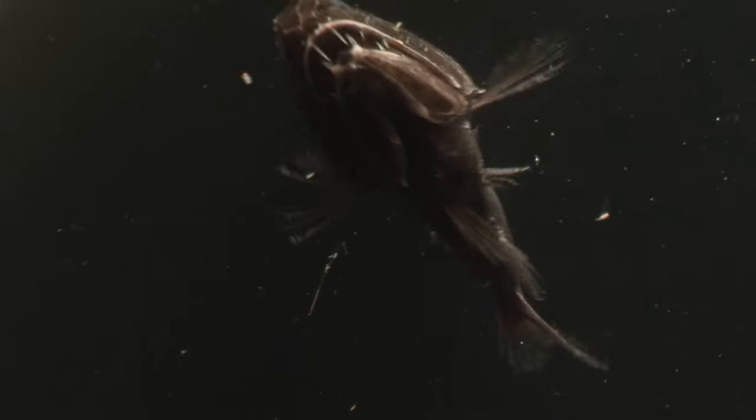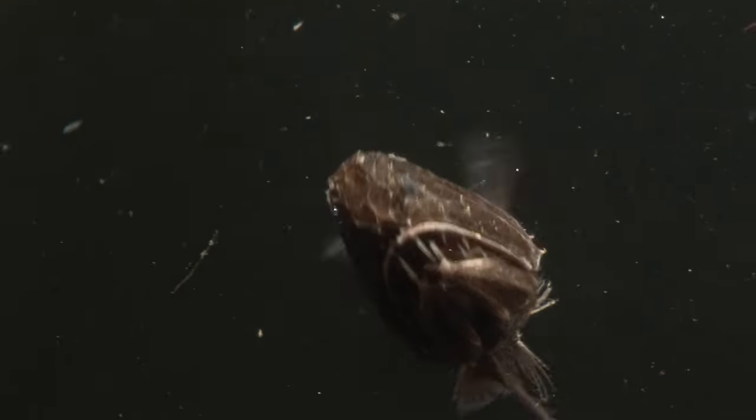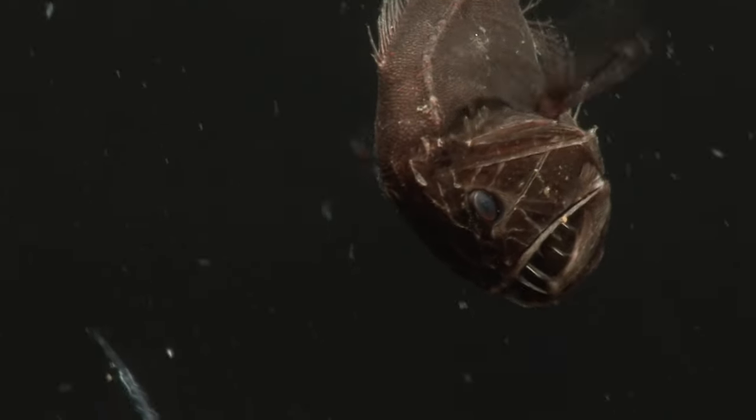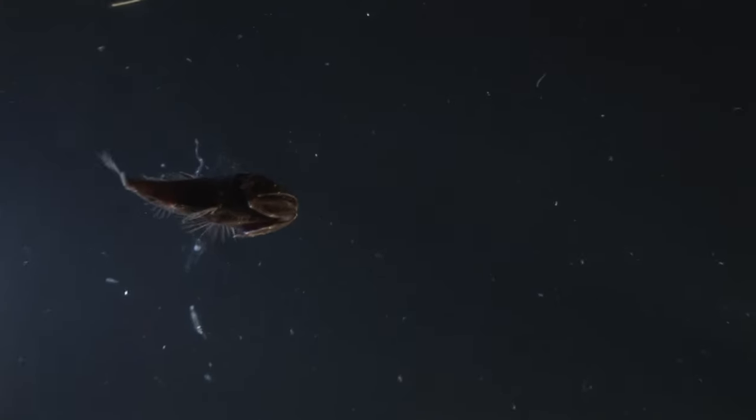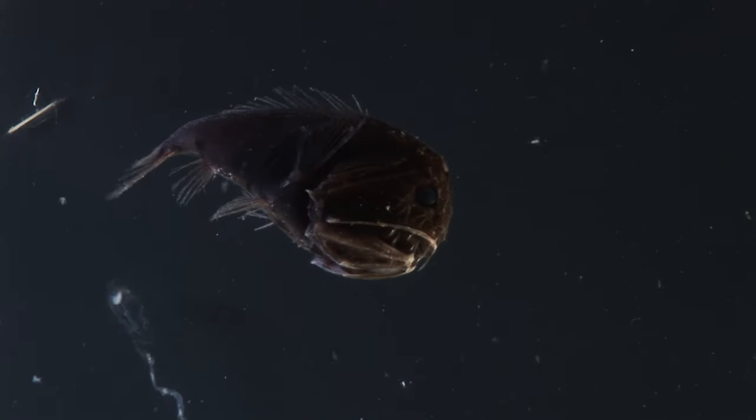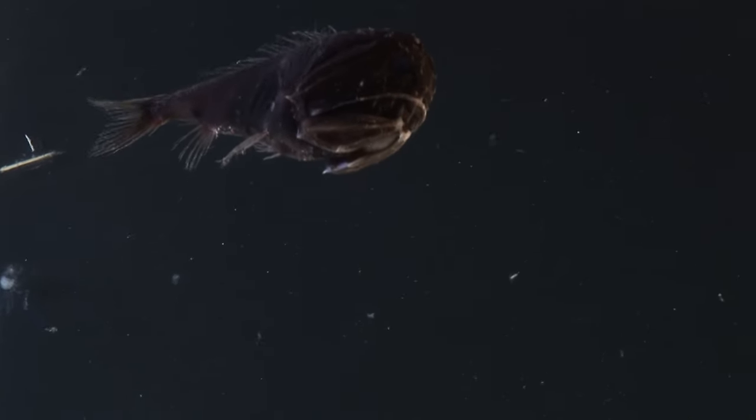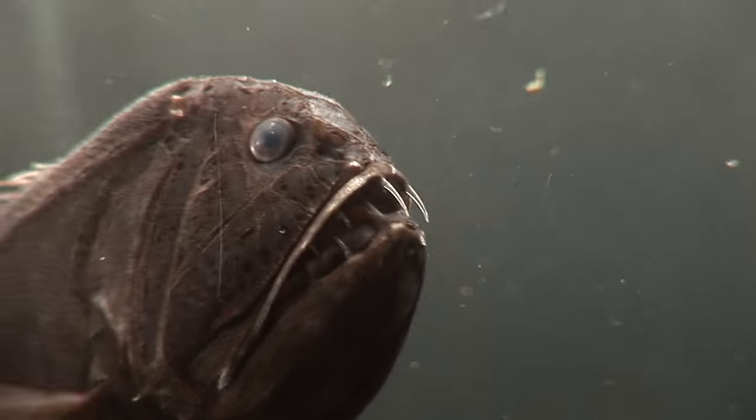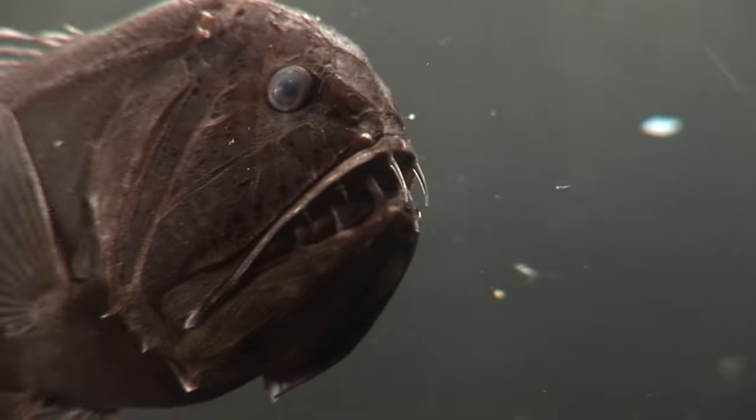But what about the fangtooth? It hasn't got any light organs at all, and yet certainly lives in the pitch black depths. But it makes up for that lack of brains in its brawn. It's got powerful muscles, and it's thought by some to be a highly mobile and aggressive hunter. In fact, when we caught this one in the trawl and brought it into a tank, it tried to bite our hands, and was really feisty, biting into a brush that we used to clean the tank. And going after a dead shrimp in the tank too.